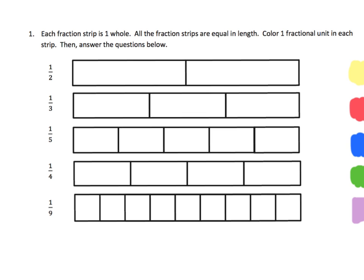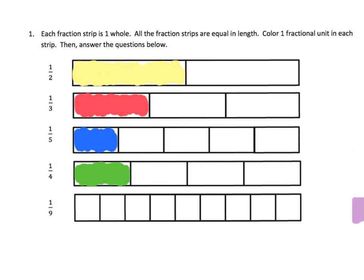We begin by looking at these fraction strips. The directions say that each number strip represents one whole, and then we color one fractional unit — a unit fraction — for each strip. So we shade in one half, one third, a fifth, a fourth, and then a ninth. Parents and teachers, as we're doing this, we want students to be thinking about patterns here.